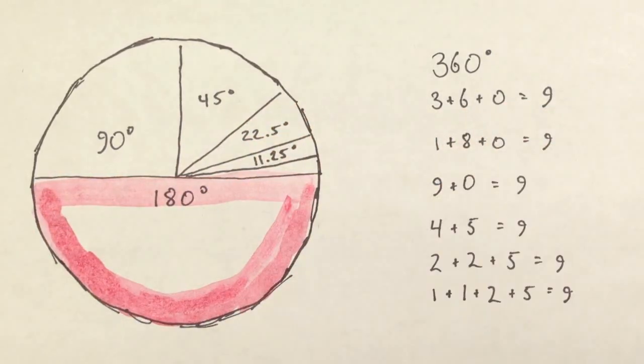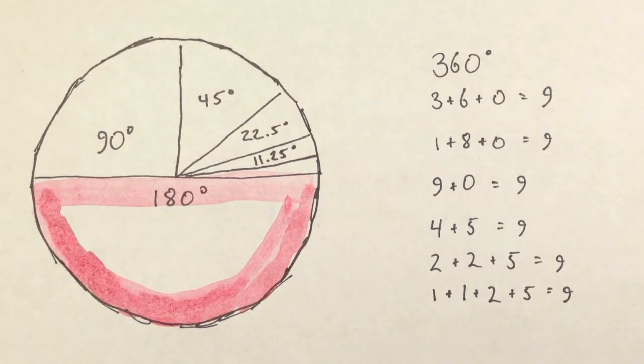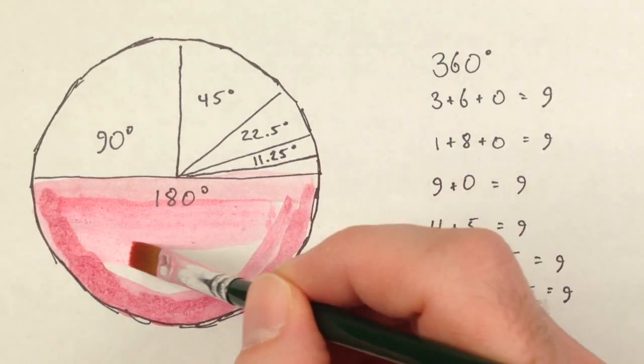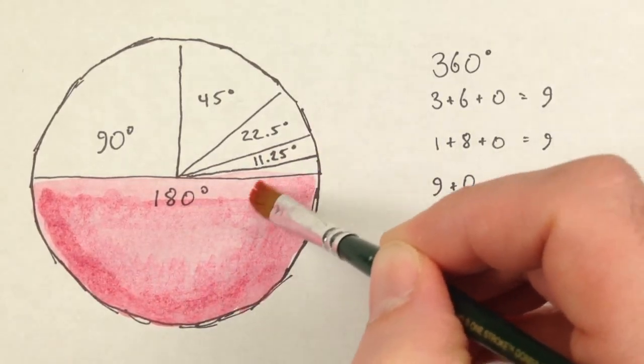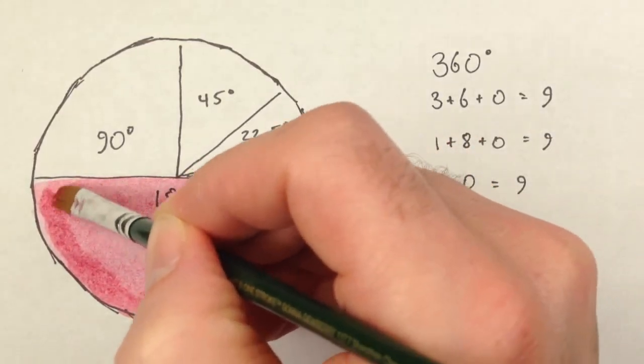My criticism of vortex-based mathematics is this. The recurrence of the number 9 is more plausibly due to the properties of the decimal system than that it is an actual property of the universe.